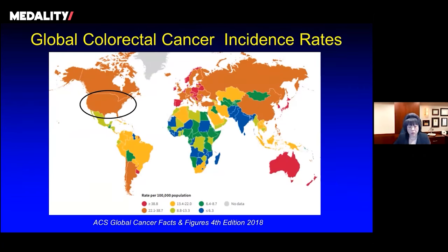Here's a heat map of the incidence rates for colorectal cancer. You can see that Australia has a very high incidence rate shown in red. Everything in orange is also fairly high, including North America — here's the United States — and large portions of Europe as well.